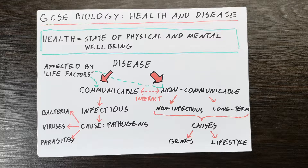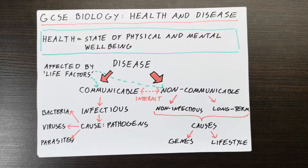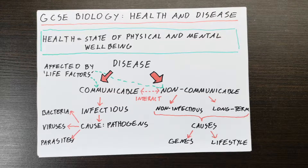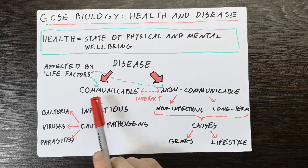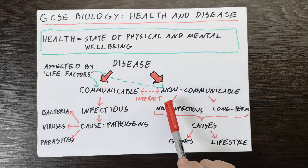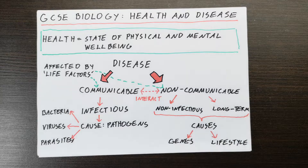So if that's health, what is disease? Disease is a condition or a factor that stops you from being healthy — that negatively impacts on one's state of health. Now, diseases divide into two different types: communicable diseases and non-communicable diseases.